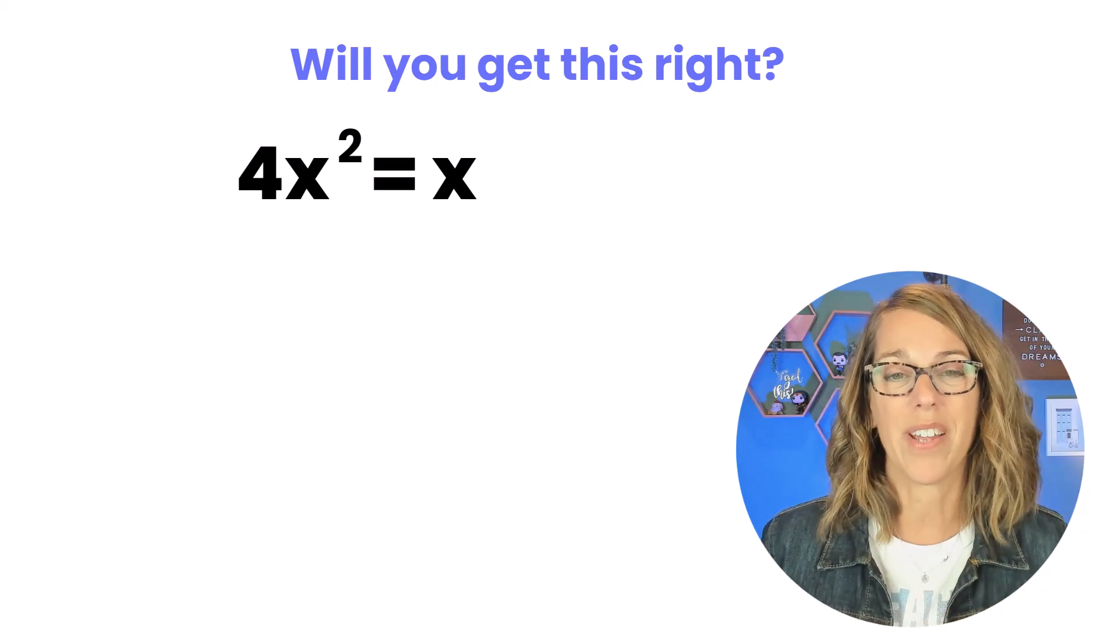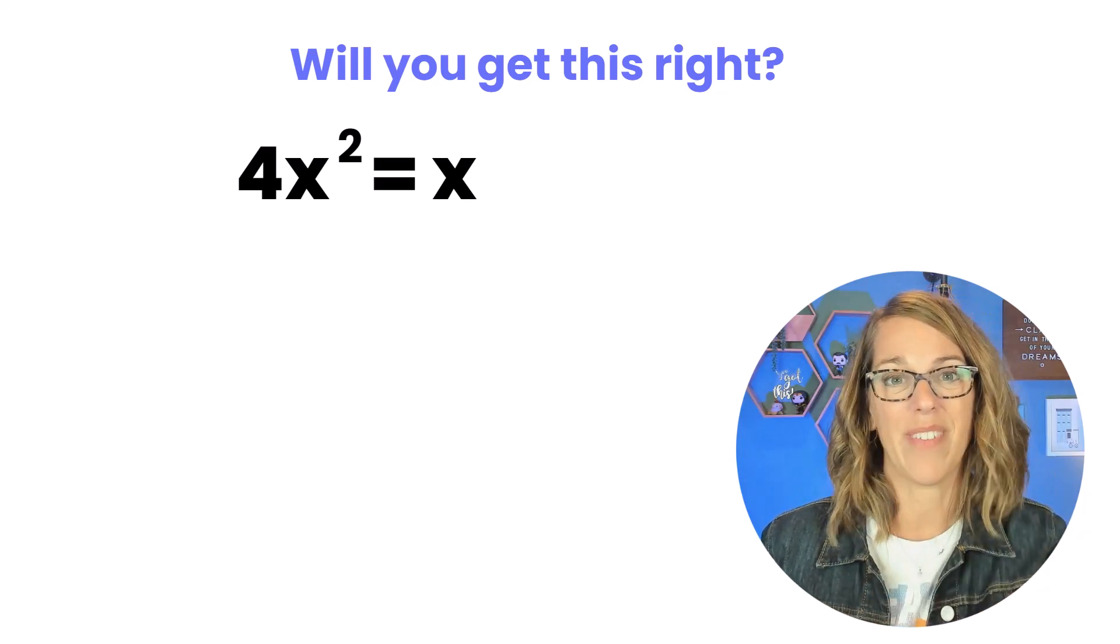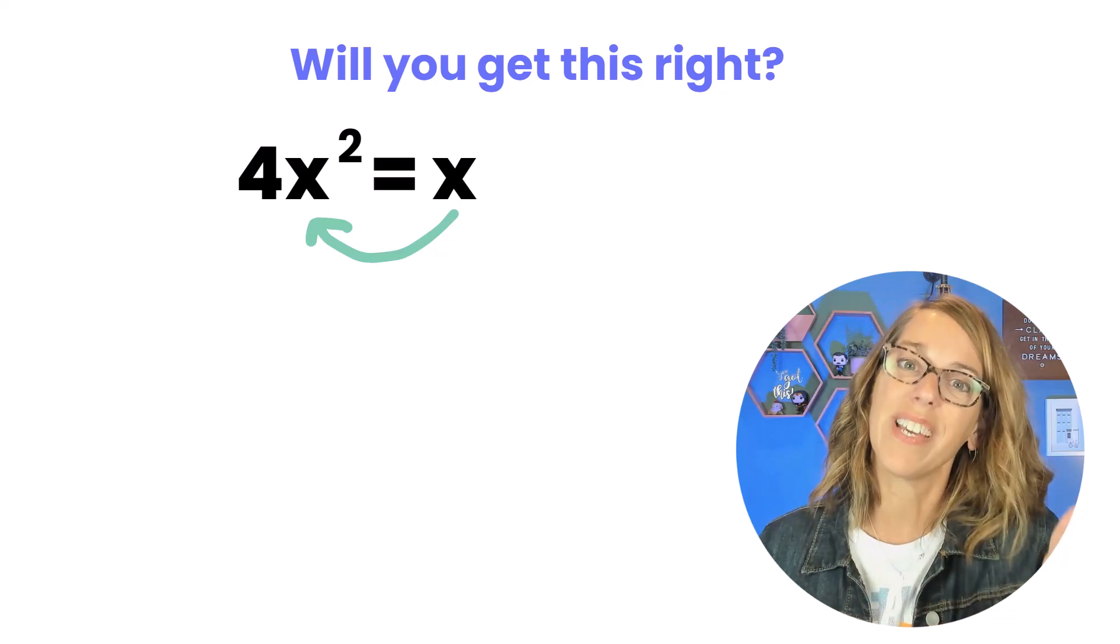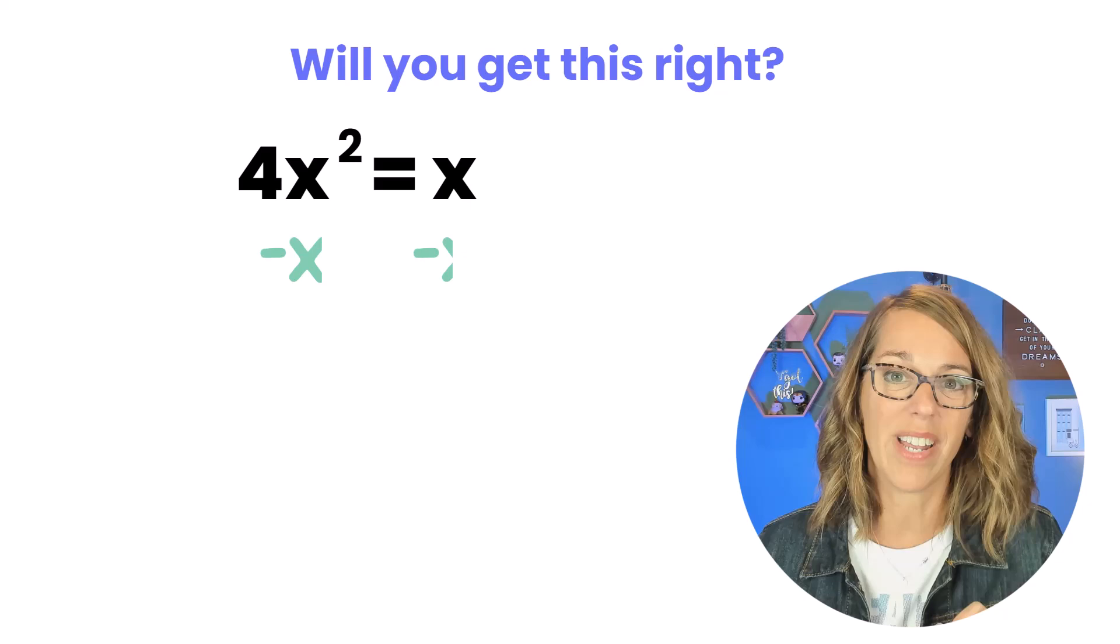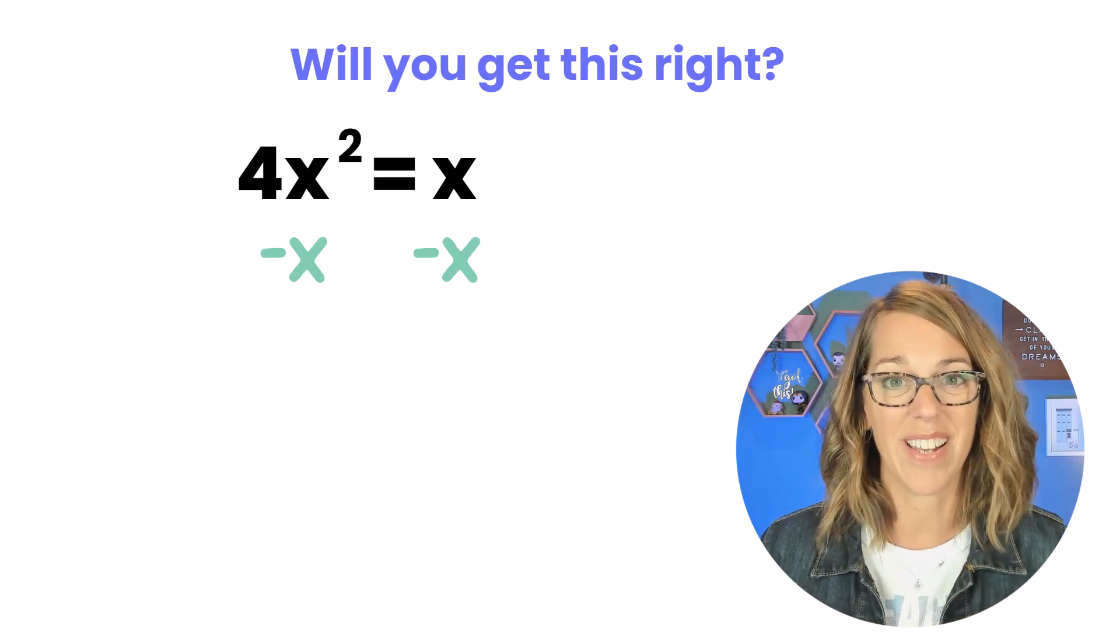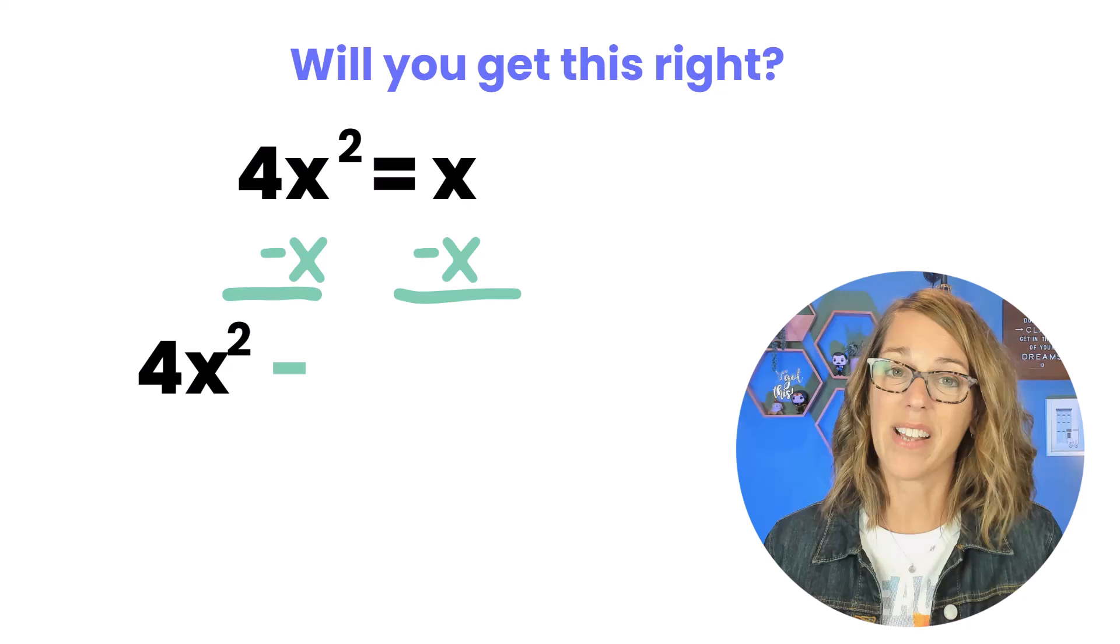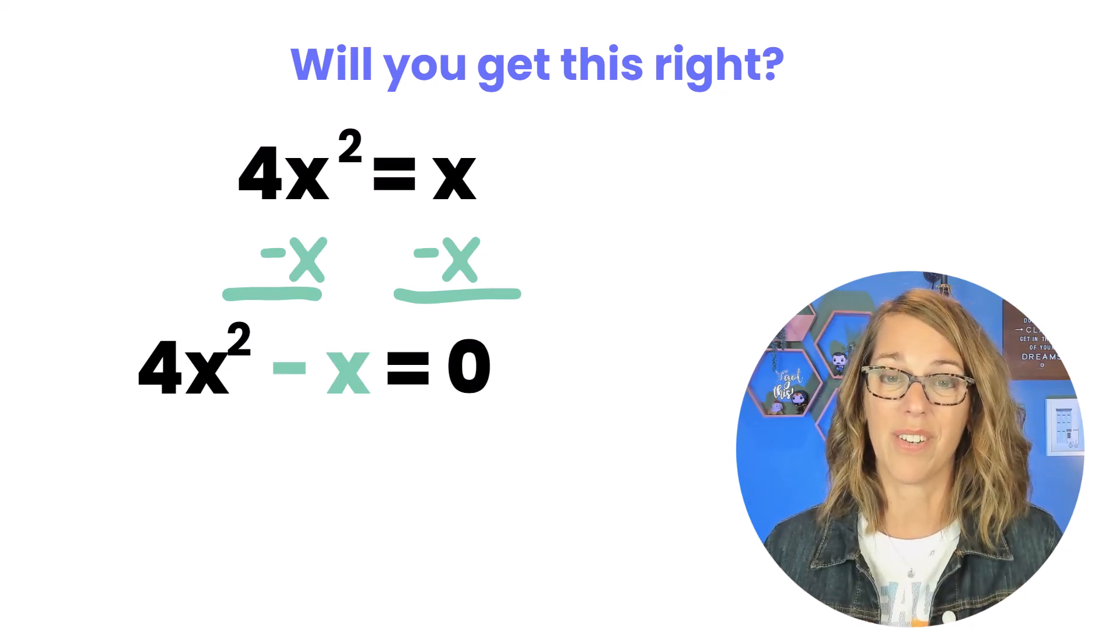Starting with our 4x² equals x, we do not want to get rid of that x. Instead we want to bring it to the other side along with the other x term. So let's subtract that from both sides. We end up then with 4x² minus x equals zero.